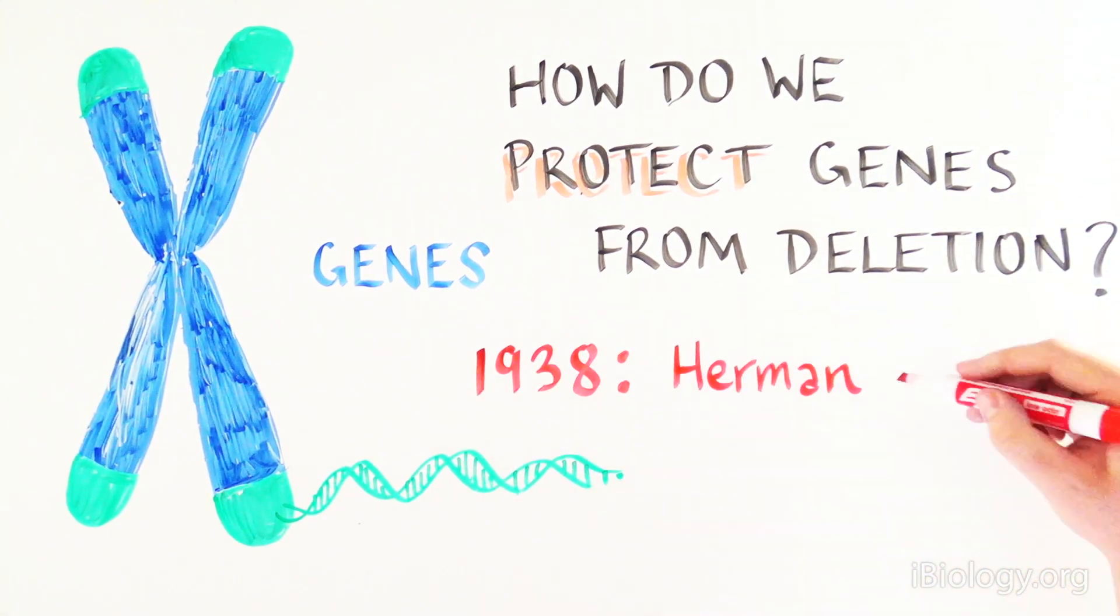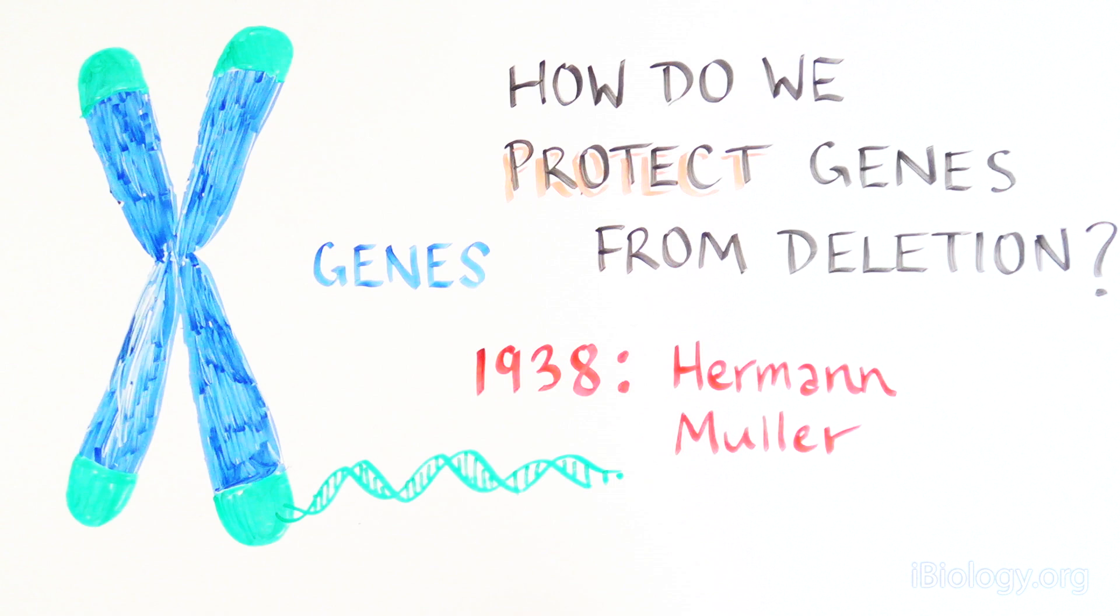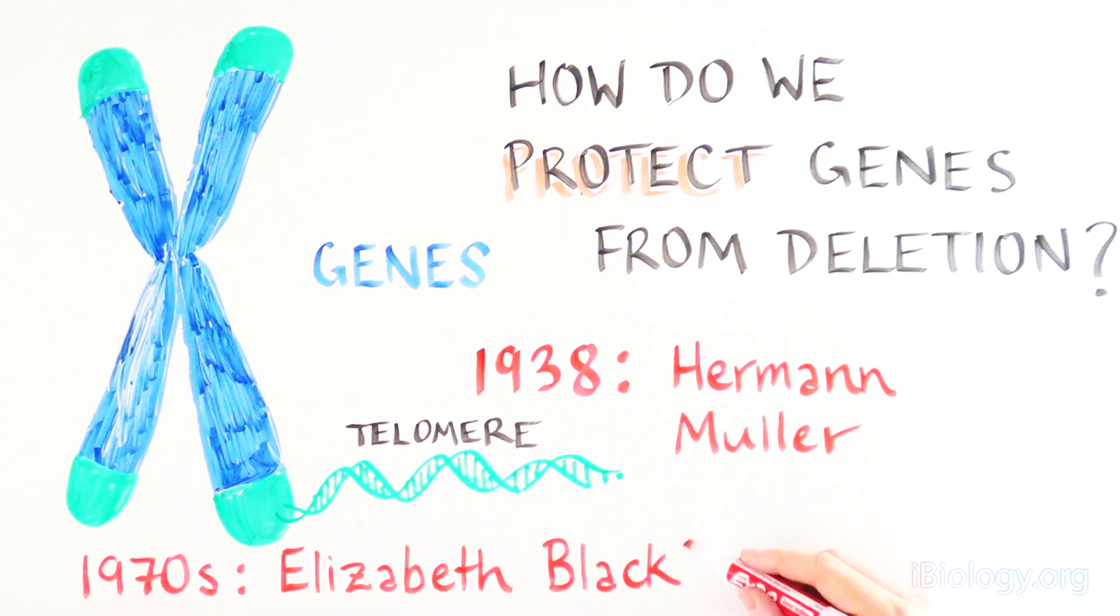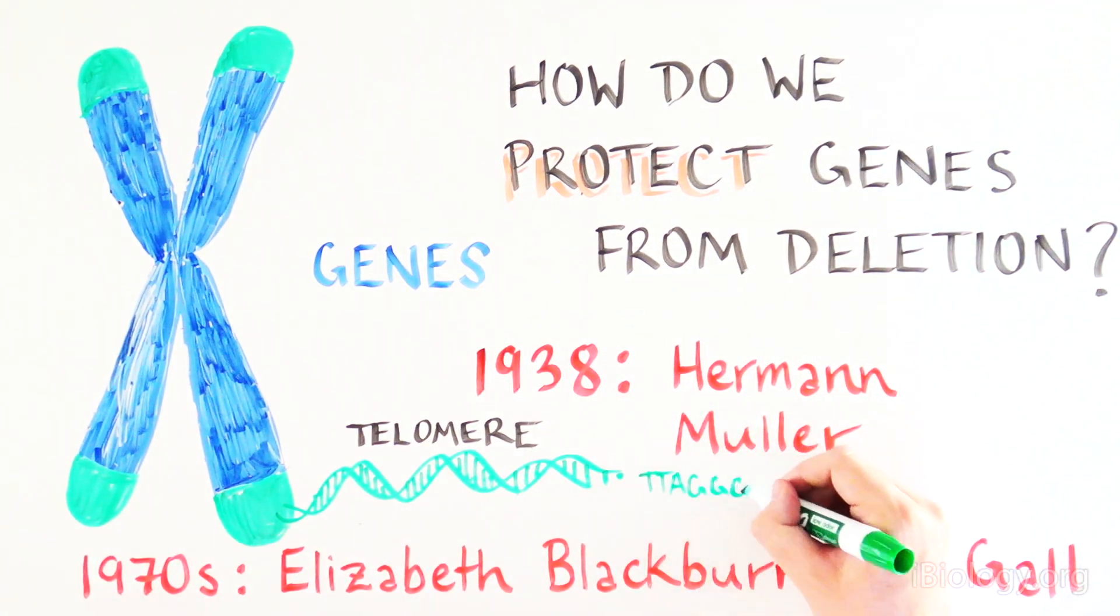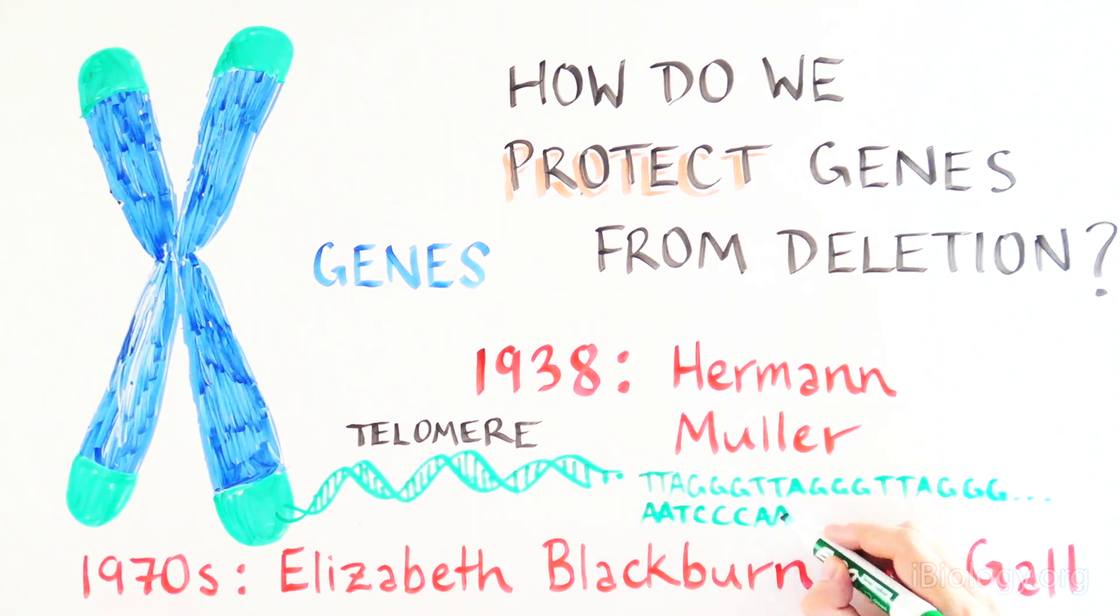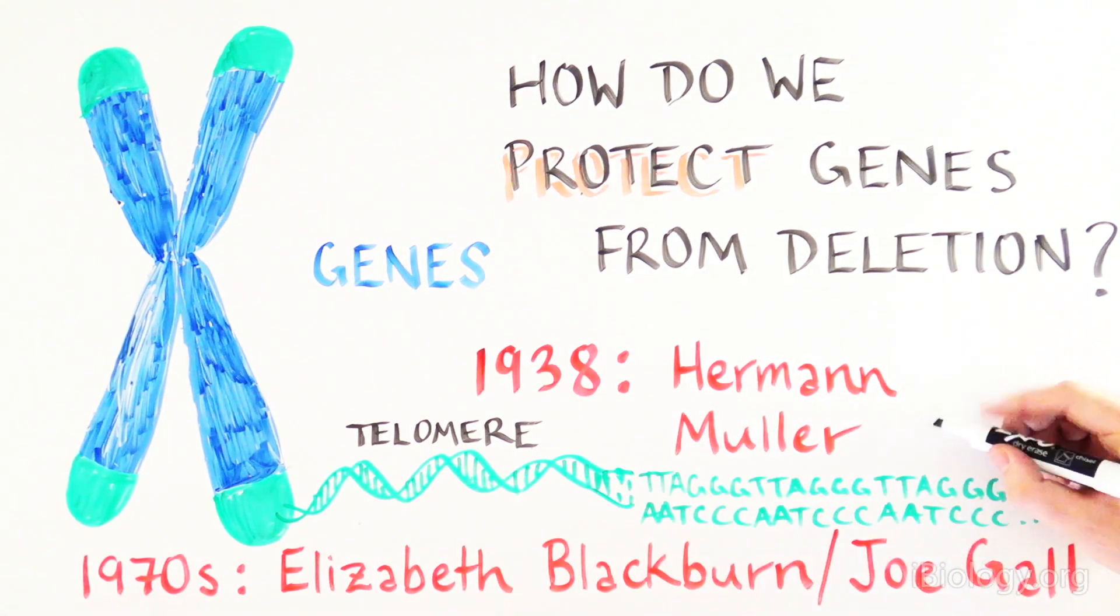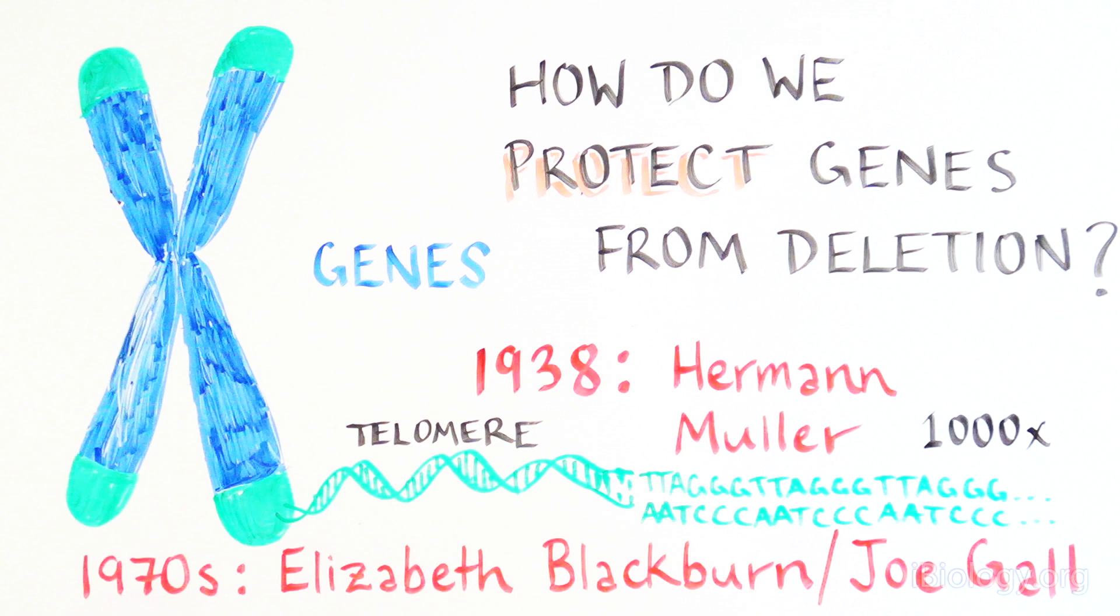In 1938, Herman Muller observed that the ends of linear chromosomes had unique properties and called this region the telomere. In the 1970s, Elizabeth Blackburn and Joseph Gall discovered that all telomeres consisted of a very specific DNA sequence made up of thousands of repeats of the same nucleotides: TTA-GGG in yeast, mammals, etc.